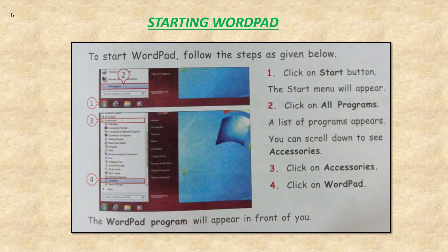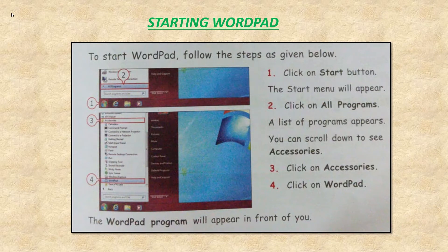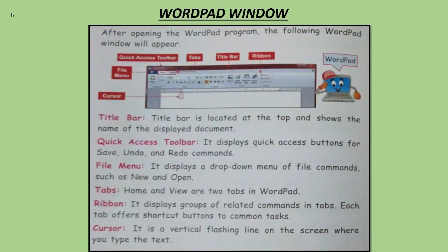Starting WordPad: to start WordPad, you need to follow some steps. First, click on the Start button — the Start menu will appear. Second, click on All Programs — a list of programs appear. You can scroll down to see Accessories. Step 3, click on Accessories. Step 4, click on WordPad. The WordPad program will appear in front of you.